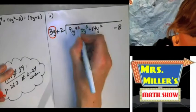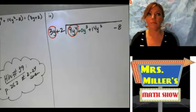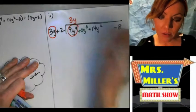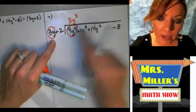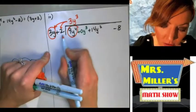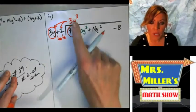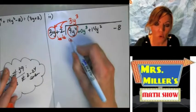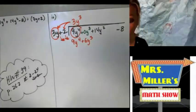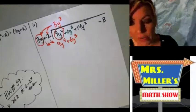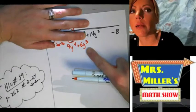3y goes into 9y to the 4th — what do I multiply 3y by to get 9y to the 4th? Aiden: 3y to the 3rd power. Everybody give it up for Aiden. Then we distribute: 3y cubed times 3y is 9y to the 4th, and 2 times 3y is 6y cubed. If we did not have that y cubed placeholder in there, we would be trying to combine a y squared with a y cubed, but they're not like terms — you can't combine them.